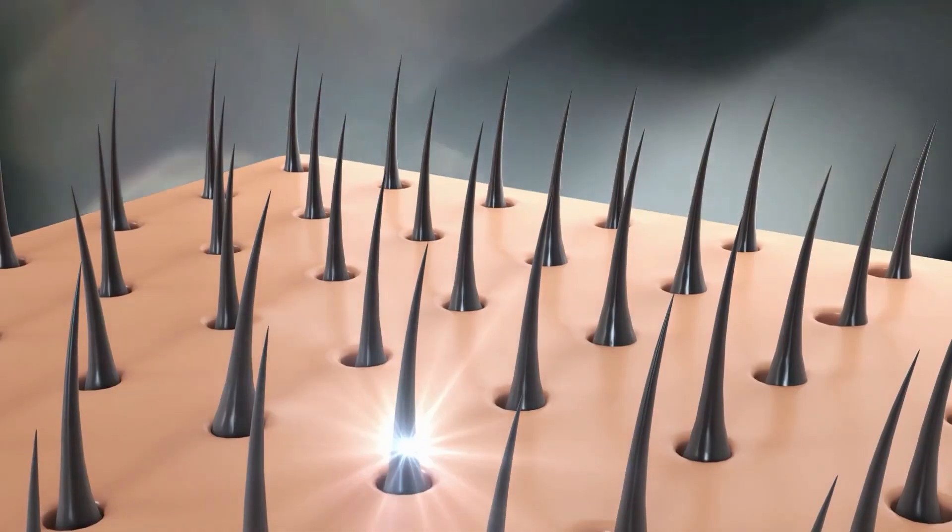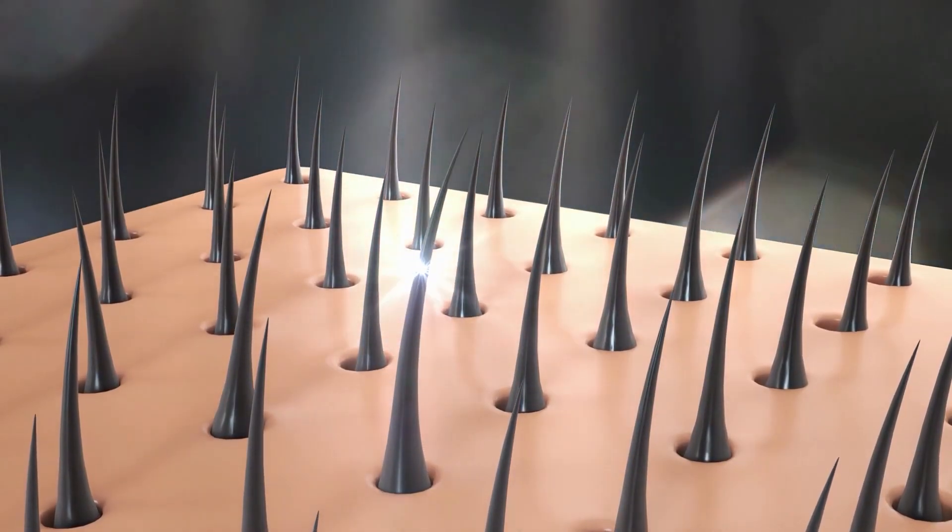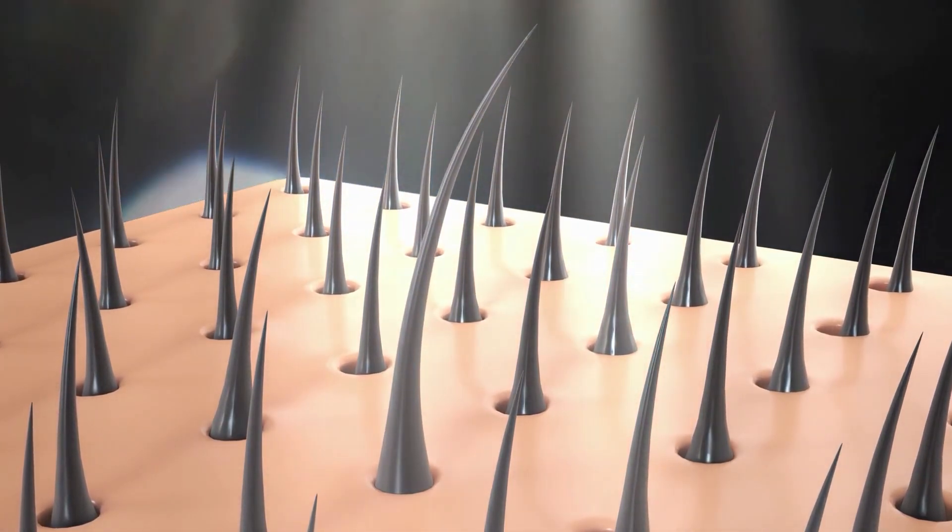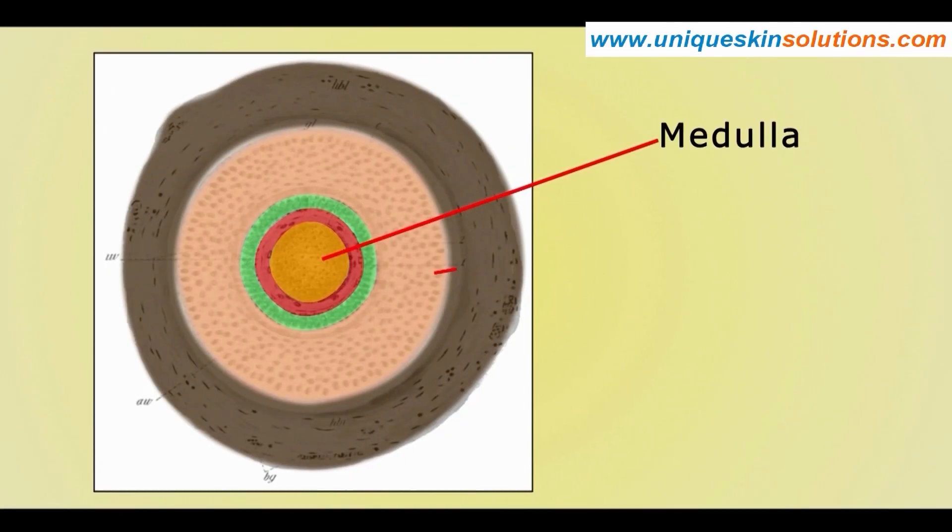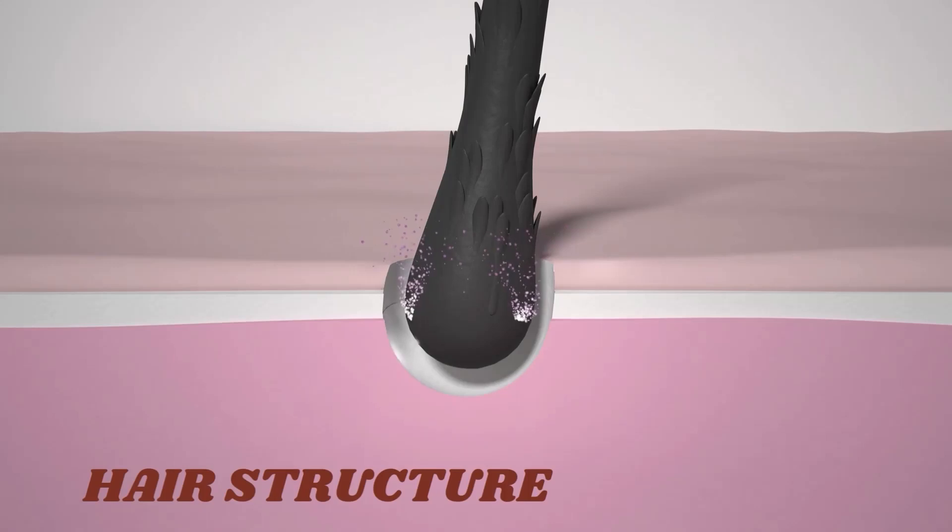Hair is dead stuff - three layers of slightly different dead stuff. The medulla is the innermost structure that gives strength to the hair shaft. It's surrounded by a thick layer of cells called the cortex, where you find the pigmented melanin proteins that give hair its color.